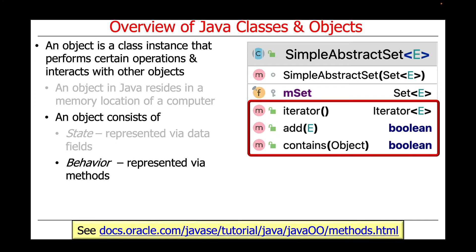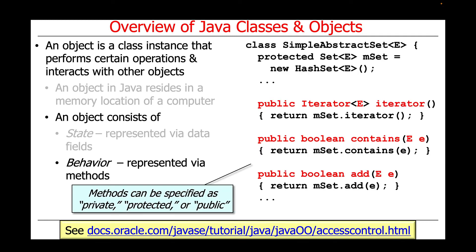An object also consists of behavior, which is represented by the methods in the class. For example, you can see that SimpleAbstractSet contains an iterator, add, and contains method. Methods can also be specified as private, protected, or public. In this case, we've defined the methods as public. If they were defined as protected, they wouldn't be visible to clients, but they would be visible to subclasses. If they were defined as private, they wouldn't be visible to subclasses either.